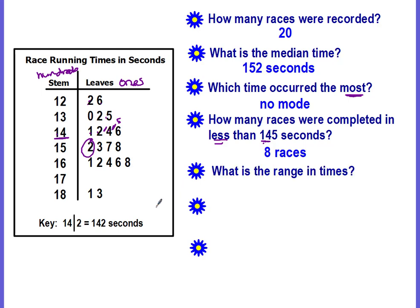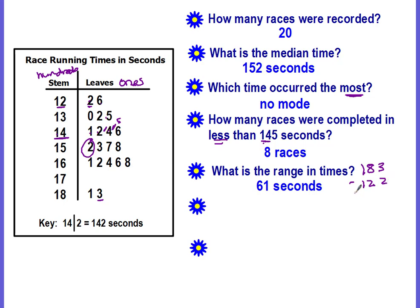What is the range in times? Did you get sixty-one seconds? Remember, range means high minus low. The highest time has eighteen as your stem and a three as your leaf — so that's a hundred and eighty-three seconds. The lowest time has a twelve as your stem and the smallest leaf is a two — so that's a hundred and twenty-two seconds. Subtract them and you get sixty-one seconds.